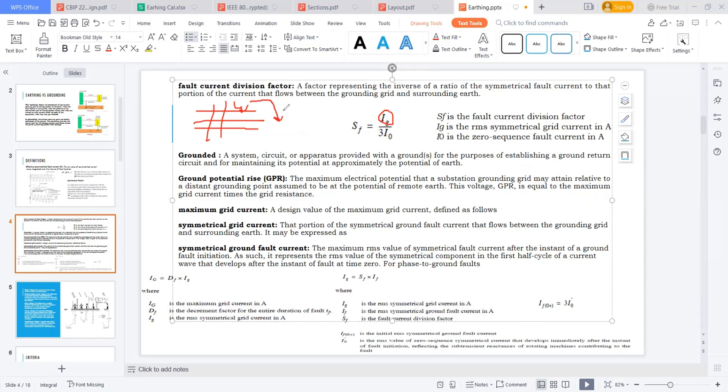But what is the maximum current? Suppose 25 kiloamps is the fault current occurring in my system. On the grid, I can see only 12.5 kiloamps flowing in the grid, the remainder going to the surrounding earth. Then the fault current division factor is 12.5 divided by 25, which is nearly 50 percent. So 0.5 is the fault current division factor.